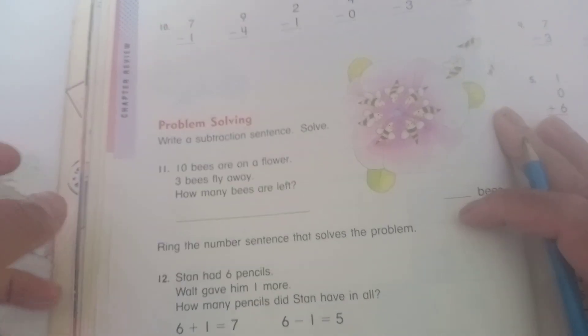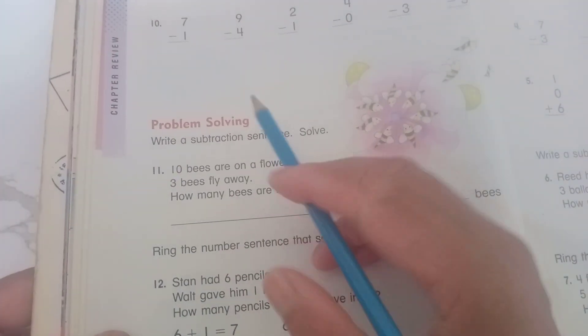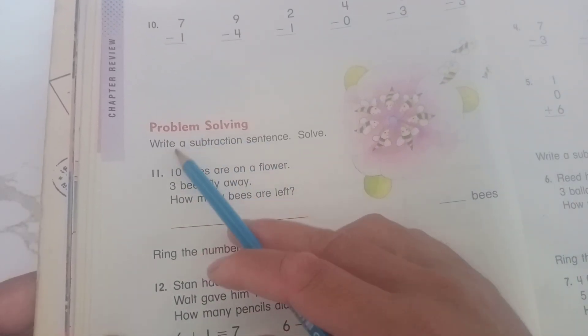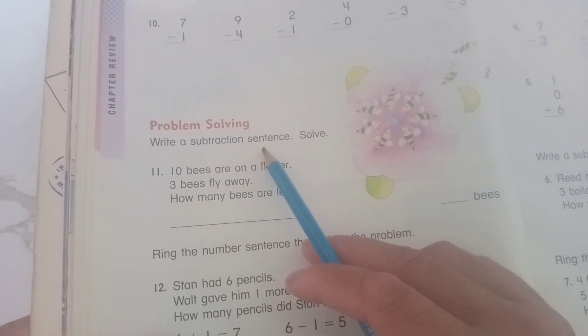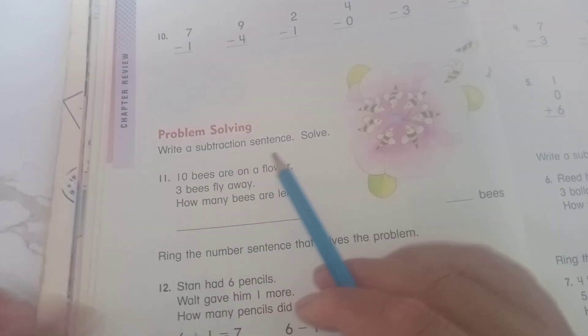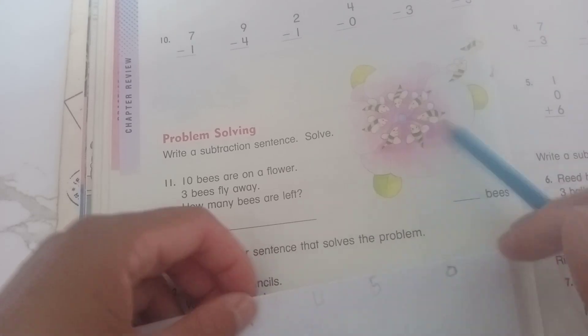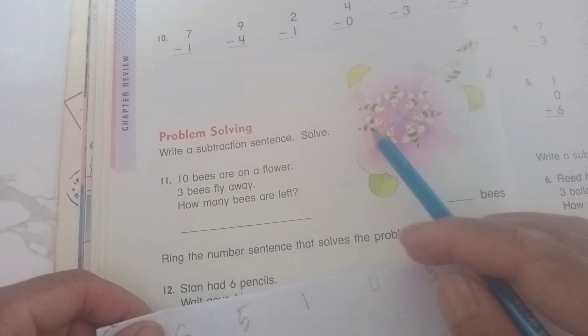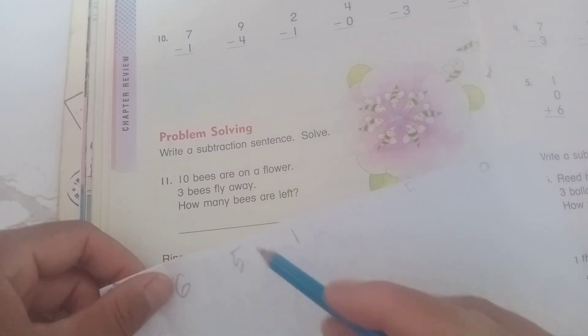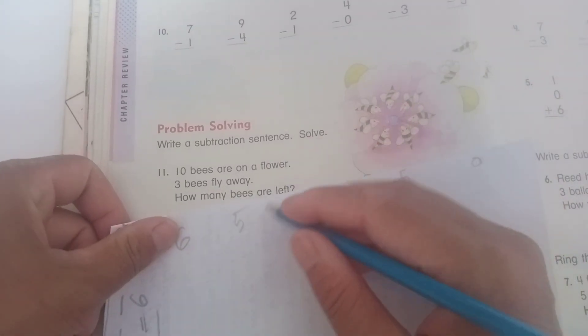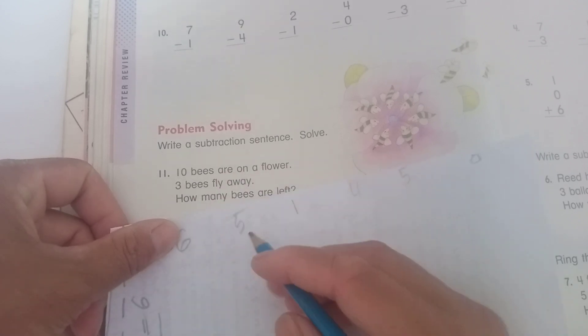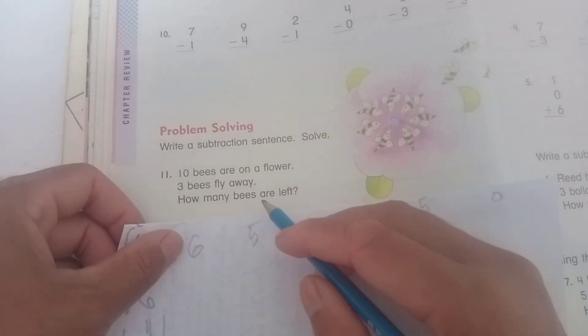Problem 11: Ten bees are on a flower. Ten bees, one, two, three, four, five, six, seven, eight, nine, ten. Three bees fly away. How many bees are left?